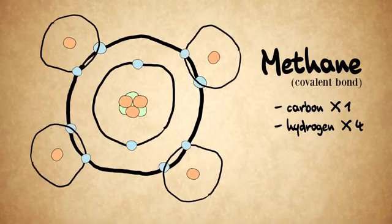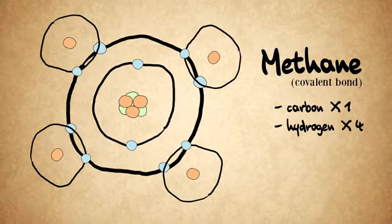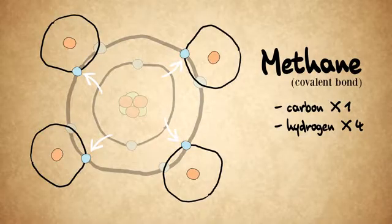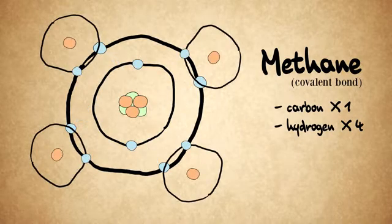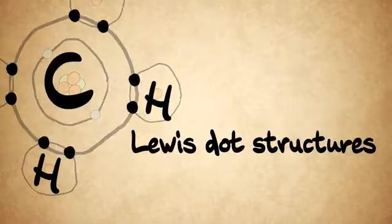Carbon forms a lot of bonds that we call covalent — bonds where the atoms actually share electrons. So the simplest carbon compound ever, methane, is carbon sharing four electrons with four hydrogen atoms. Hydrogen only has one electron, so it wants its first S orbital full. Carbon shares its four electrons with those four hydrogens, and those four hydrogens each share one electron with carbon, so everybody's happy. This can all be represented with what we call Lewis dot structures.